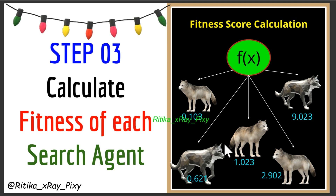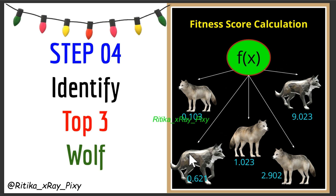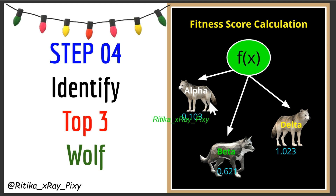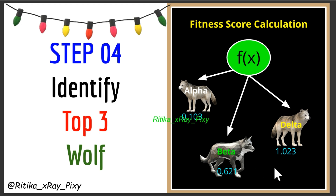According to the fitness score, we check the quality of each solution. Step 4: Identify the top 3 wolves — alpha, beta, and delta. Once we have calculated the wolves' fitness scores, we select the top 3 wolves according to their scores. Alpha means the best solution, beta means the second best, and delta means the third best. For minimization, consider the top 3 minimum fitness scores as alpha, beta, delta. For maximization, consider the top 3 maximum values as alpha, beta, delta.